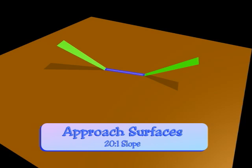Airports such as SeaTac International have a 50 to 1 precision instrument approach. To the greatest extent possible, you want to have the approach surface clear of all objects, so that nothing can impede the landing of an aircraft on final approach.